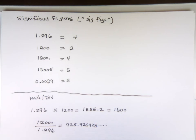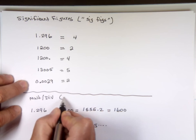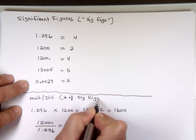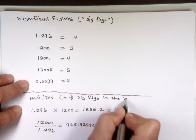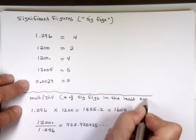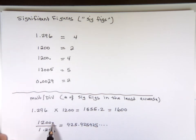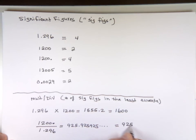For multiplication and division, use the number of significant figures in the least accurate known number. So for 1,200 divided by 1.296: 1,200 has no decimal, but how many significant digits? Four. So I've got to use four significant digits — the answer is 925.9.